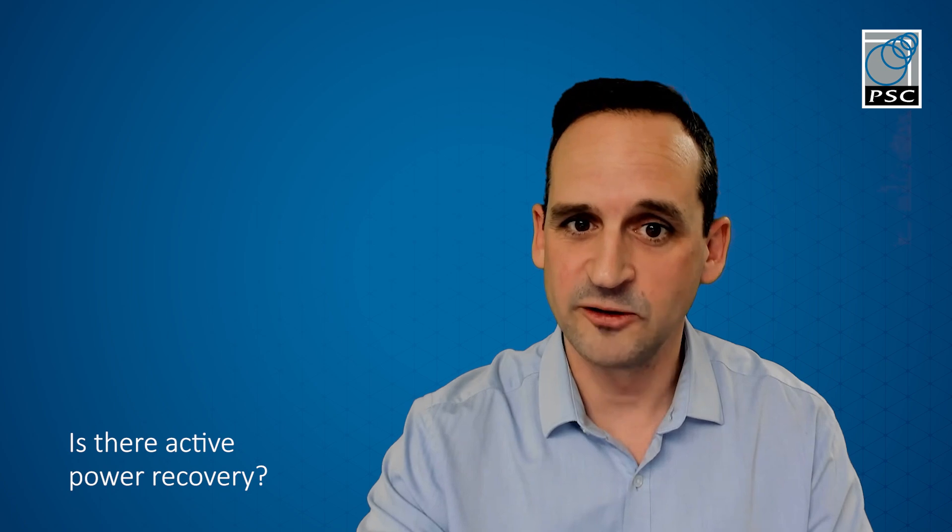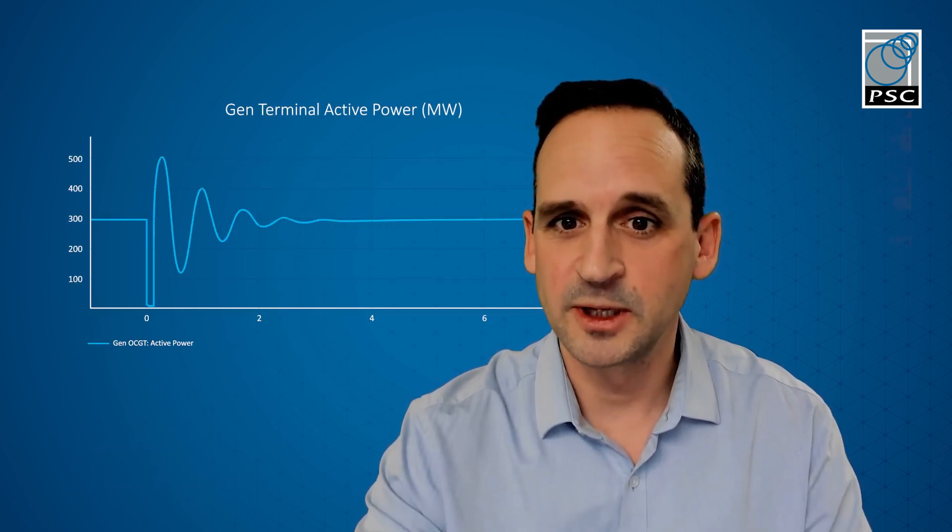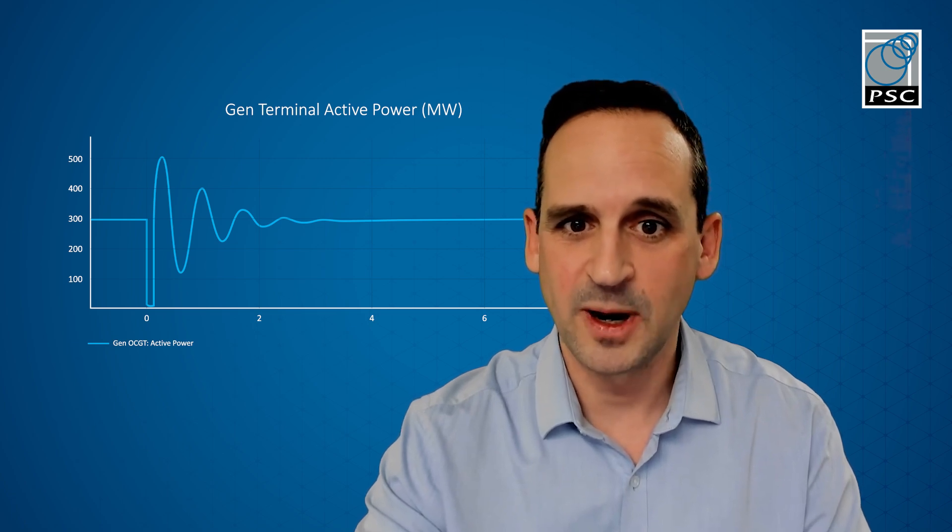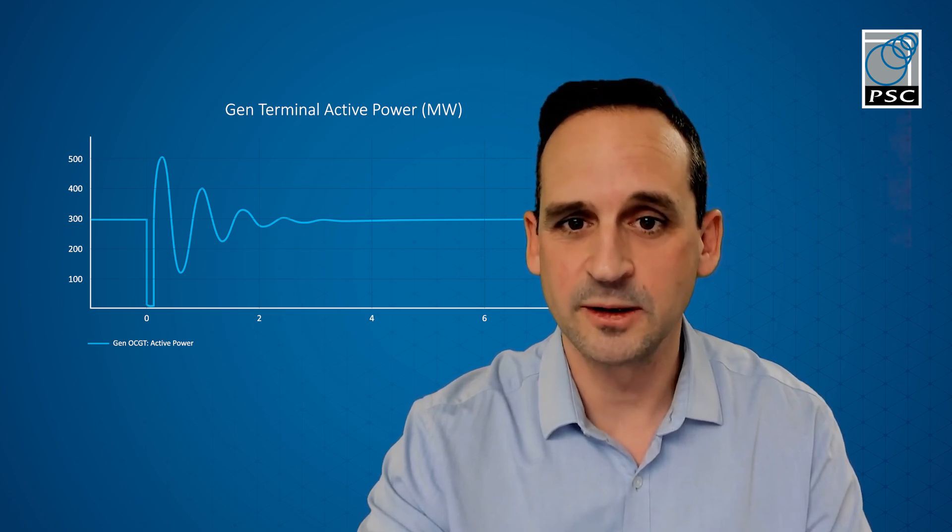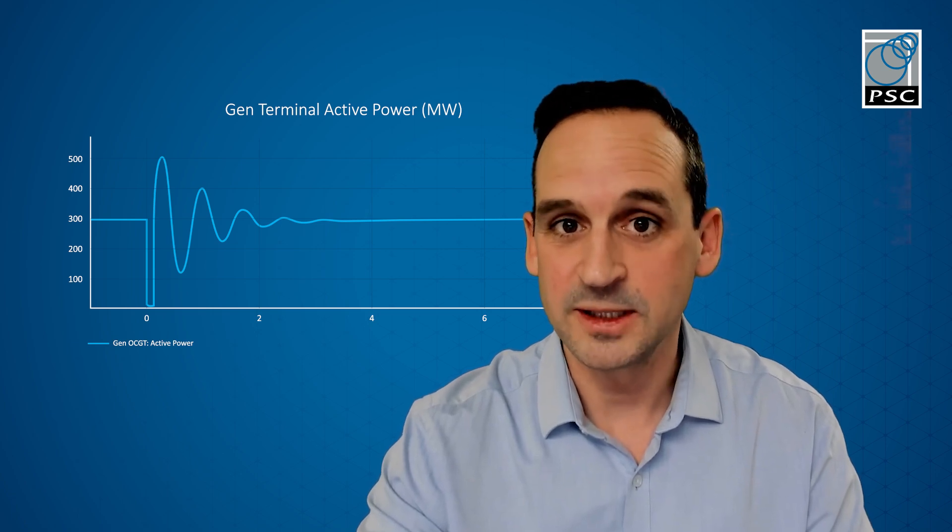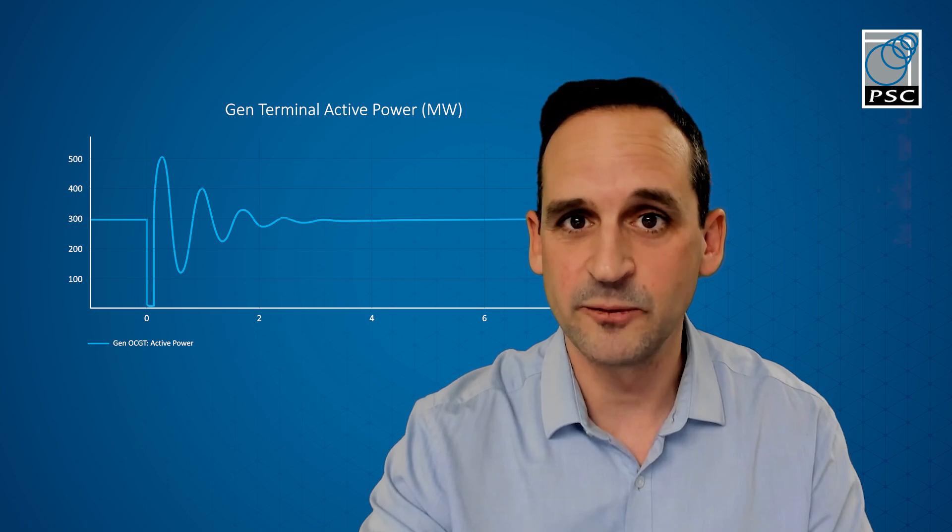Secondly, is there active power recovery? If we look at the generator power output here, it can be seen that the generator remains connected during the fault. Active power recovery occurs within half a second. There are oscillations, but these are permitted in the grid code as long as the energy delivered is equivalent to 90% of the original active power.